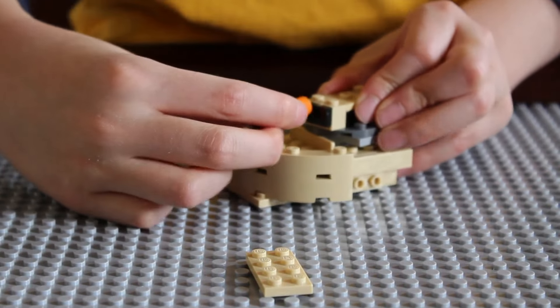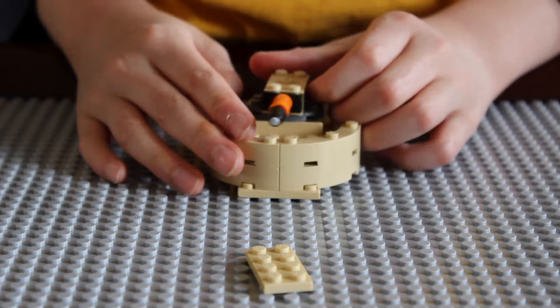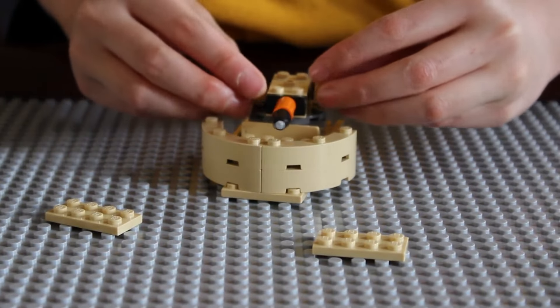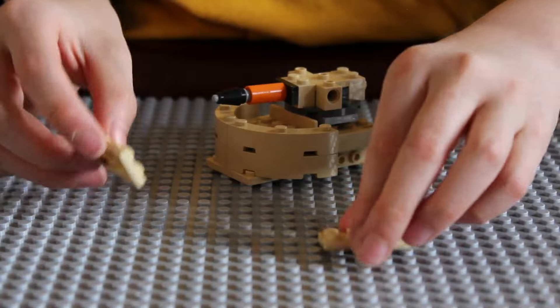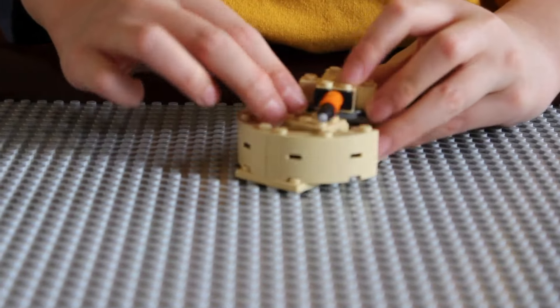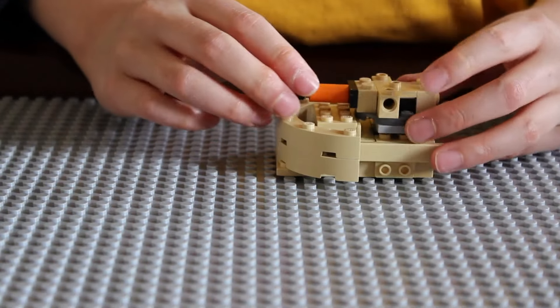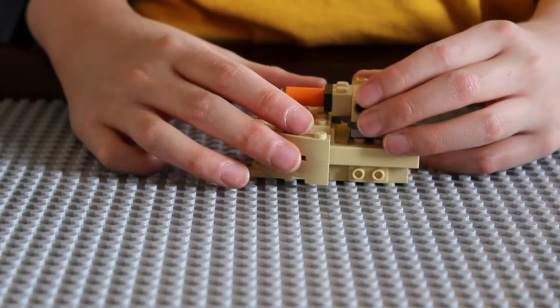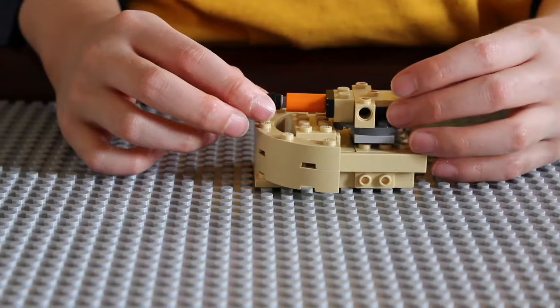Then, stick this on to here. Put these two right here. And that's how I build a Star Wars AAT.